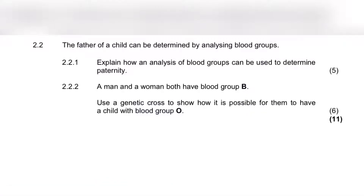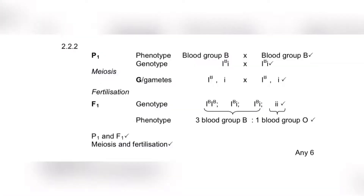The genotype of both parents needs to be I-capital-B and i (small i), for both the mother and the father. That is the only way they can produce a child with blood group O. Do the cross as shown in the memo and you will see how it is possible. The key point: both the man and woman must be heterozygous for blood group B — genotype I^B i — for them to have a child with blood group O.